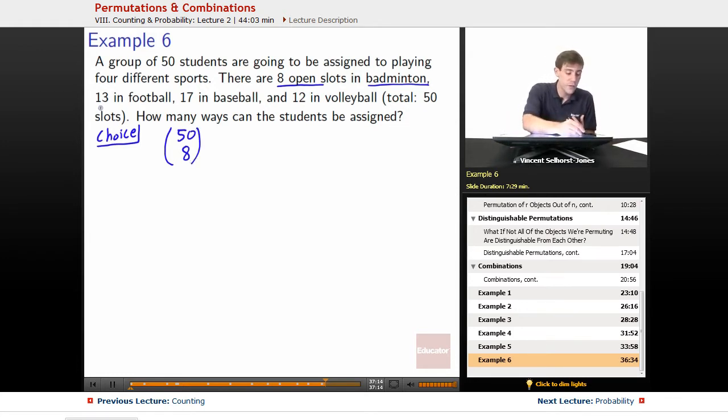Next up, let's work on the football group. It's not going to be 50 choose 13 because we just did badminton. We are now reduced by the 8 students we put into the badminton team. So 50 minus 8 is 42. So 42 choose 13 is how many we can have for football. That's all the choices for football after we've already done the choices for badminton.